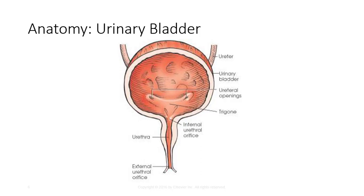The urinary bladder is a musculomembranous sac which serves as a reservoir for urine. It's located immediately posterior and superior to the pubic symphysis and lies anterior to the rectum in males, and anterior to the vaginal canal in females. The apex is anterior superior, and the neck is the lowest part. The trigone is a triangular area of the bladder base between three openings, two of which are for ureters, and the third is the internal urethral orifice.